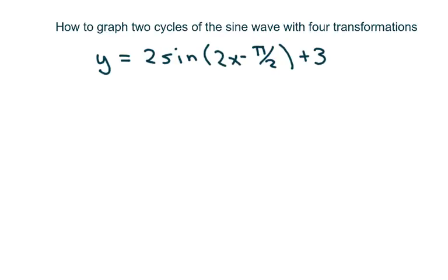We need to know our amplitude is 2. Our period equals 2 pi over b. I'm going to call this b. This is 2 pi over 2 equals pi.